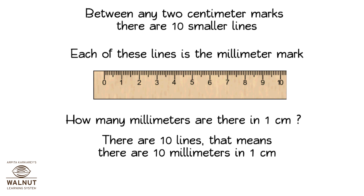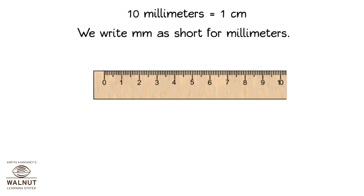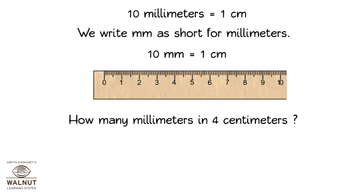How many millimeters are there in one centimeter? There are 10 lines, which means there are 10 millimeters in one centimeter. So 10 millimeters is equal to one centimeter. We write mm as short for millimeters. 10 mm is equal to 1 cm.